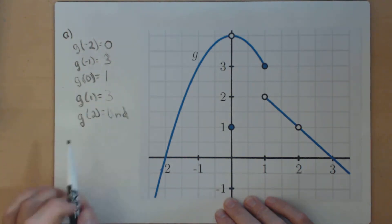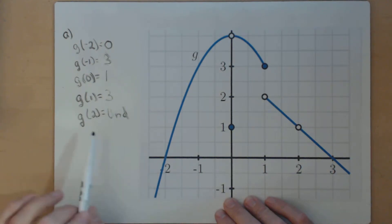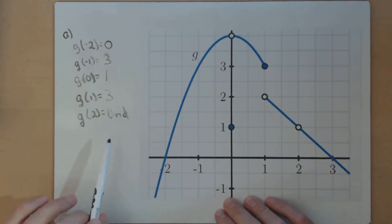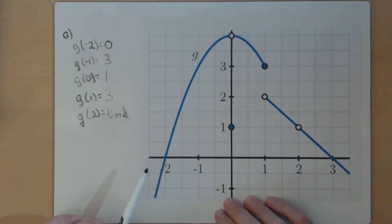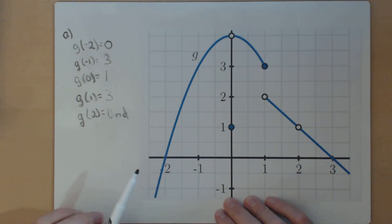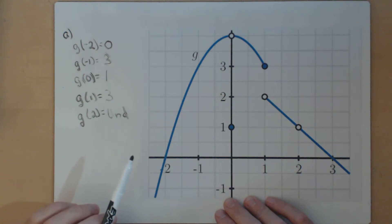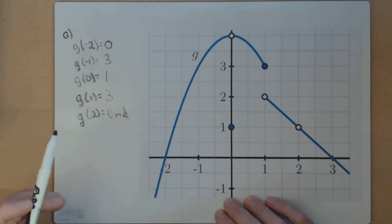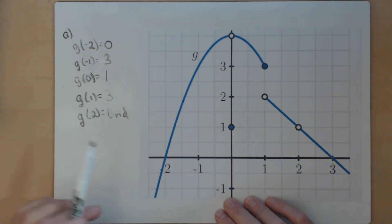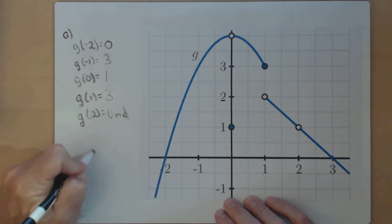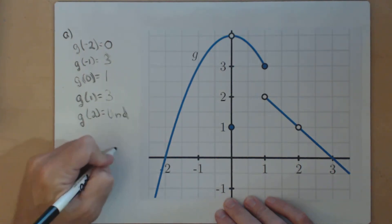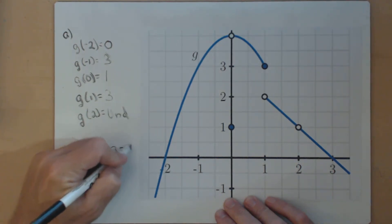So that's how we can determine outputs from the graph. Now in part B, it wants us to complete the sentence: as x gets closer and closer to, but not equal to A, g of x gets as close as we want to what? The first one is for A equals negative 1.